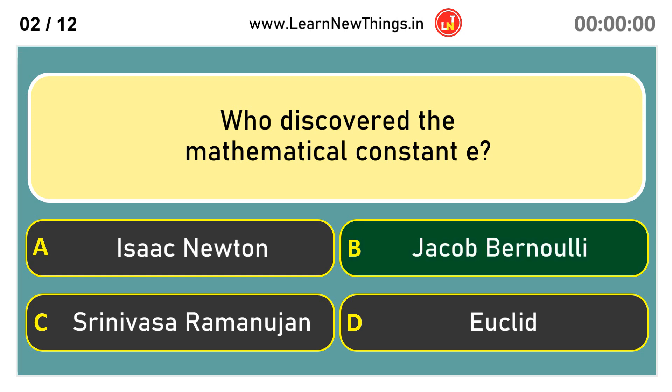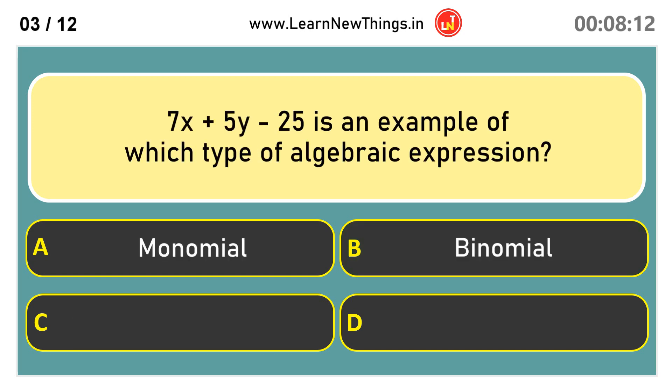Jacob Bernoulli. 7x plus 5y minus 25 is an example of which type of algebraic expression? Trinomial.